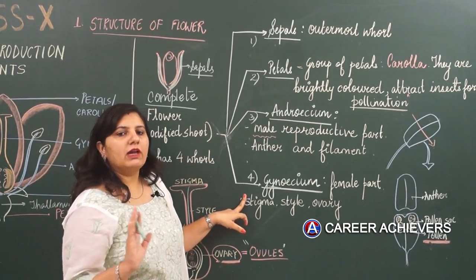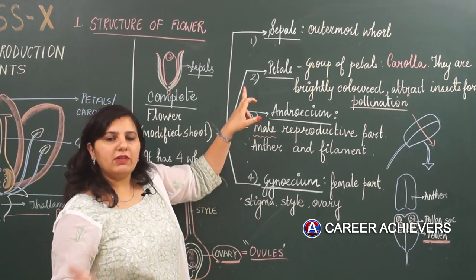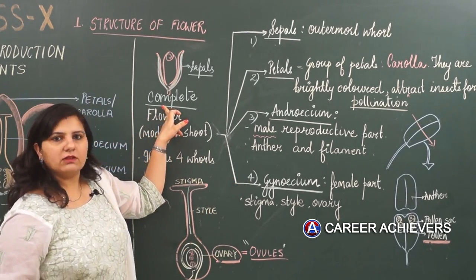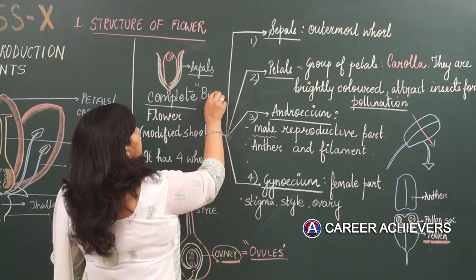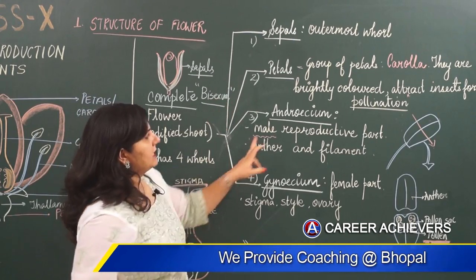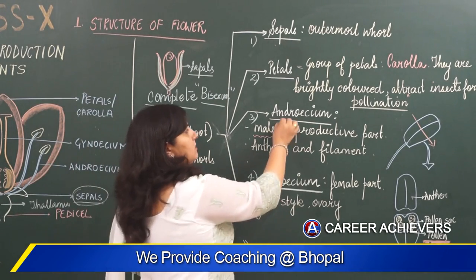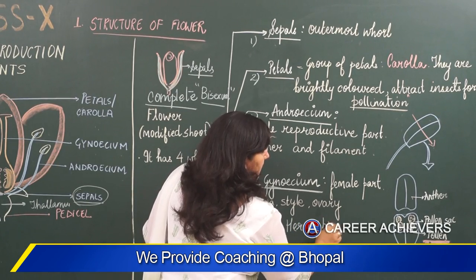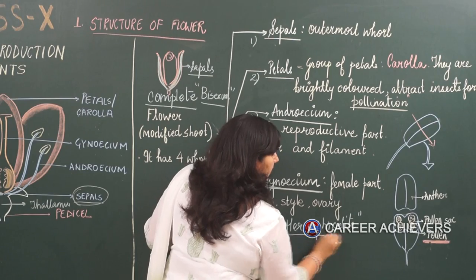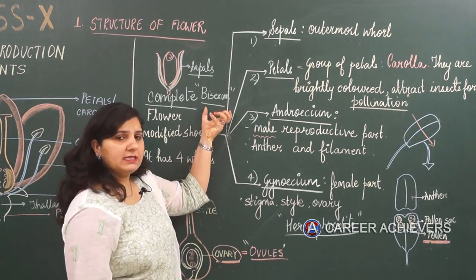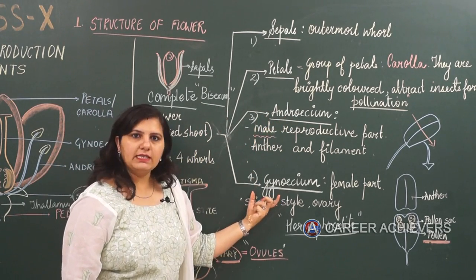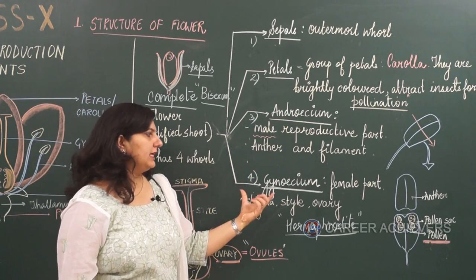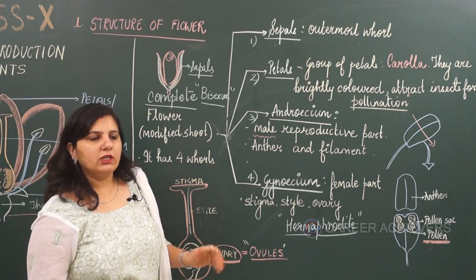If a flower is only male or only female, it is called an incomplete flower. But if it comprises all four whorls, it is called a complete flower. A complete flower is also referred to as bisexual, because it has both male and female reproductive parts. The ones which contain both androecium and gynoecium are called hermaphrodites. Hermaphrodites are bisexual flowers containing both androecium and gynoecium, forming the complete flower. Male flowers contain only androecium; female flowers contain only gynoecium.